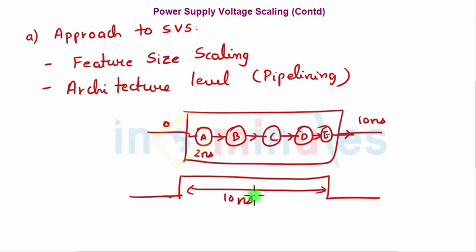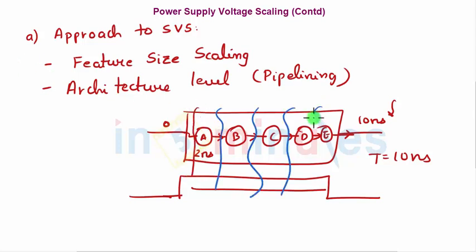Translating this to a digital circuit: in a time period of 10 nanoseconds, all blocks performing sequential operations and dependent on the output of previous stages complete their computation and produce a final output. A new output comes every 10 nanoseconds and a new input can be taken every 10 nanoseconds. To reduce this time period, we partition all these blocks and insert registers between them that operate on a clock.